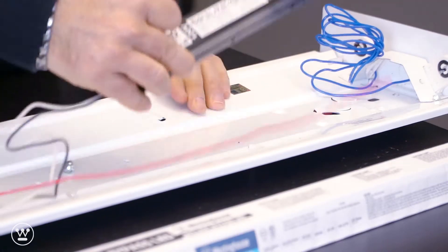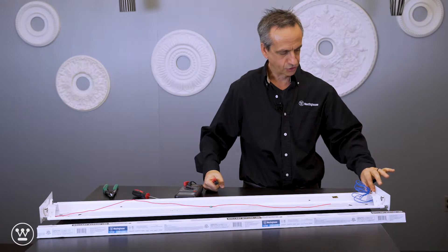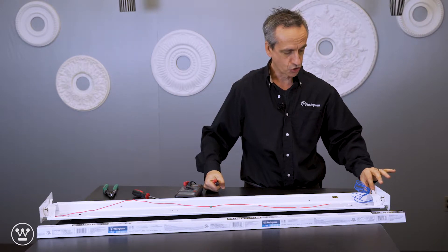Next, we want to remove the ballast. Next, we want to check the tombstones or sockets to make sure they're non-shunted.